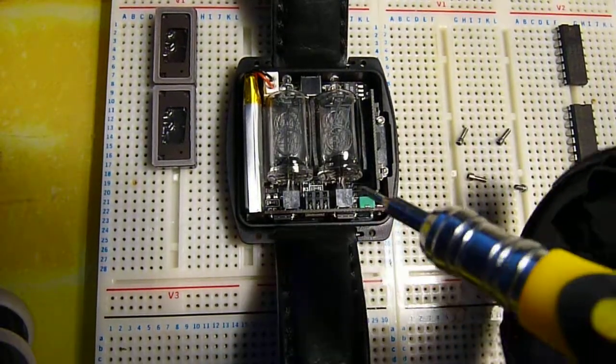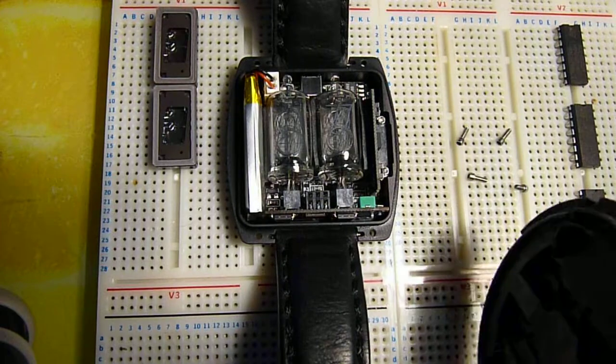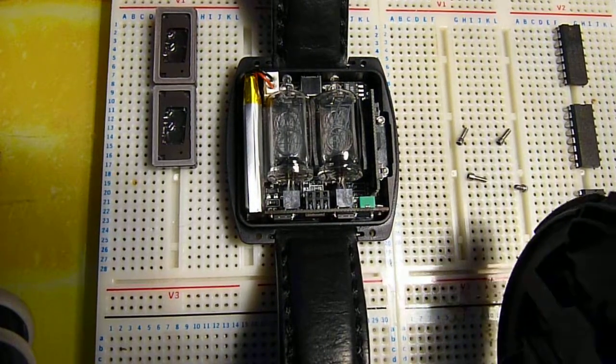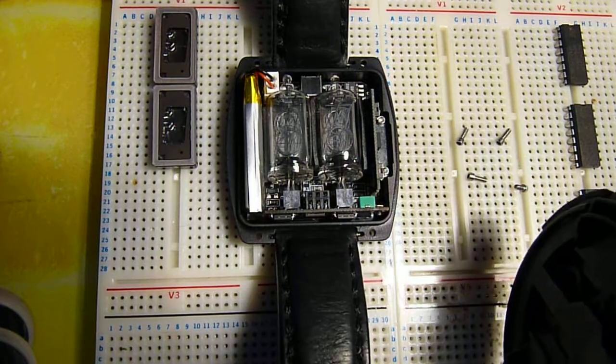Now, the lithium battery is a 3.7 volt lithium polymer, 180 milliamp hours. The Nixie tubes are user replaceable.